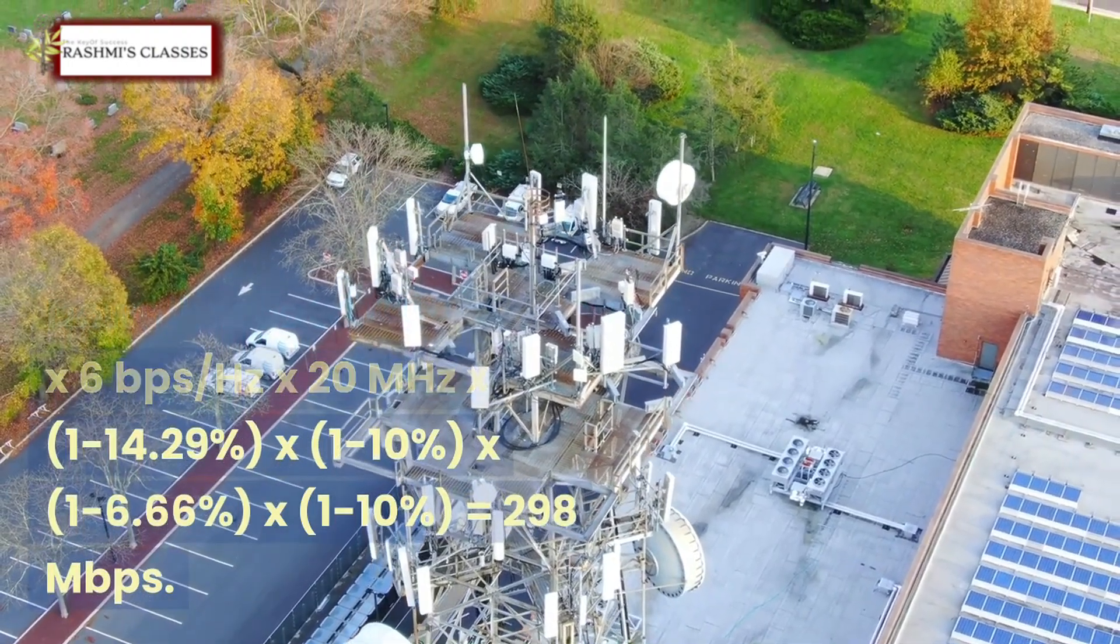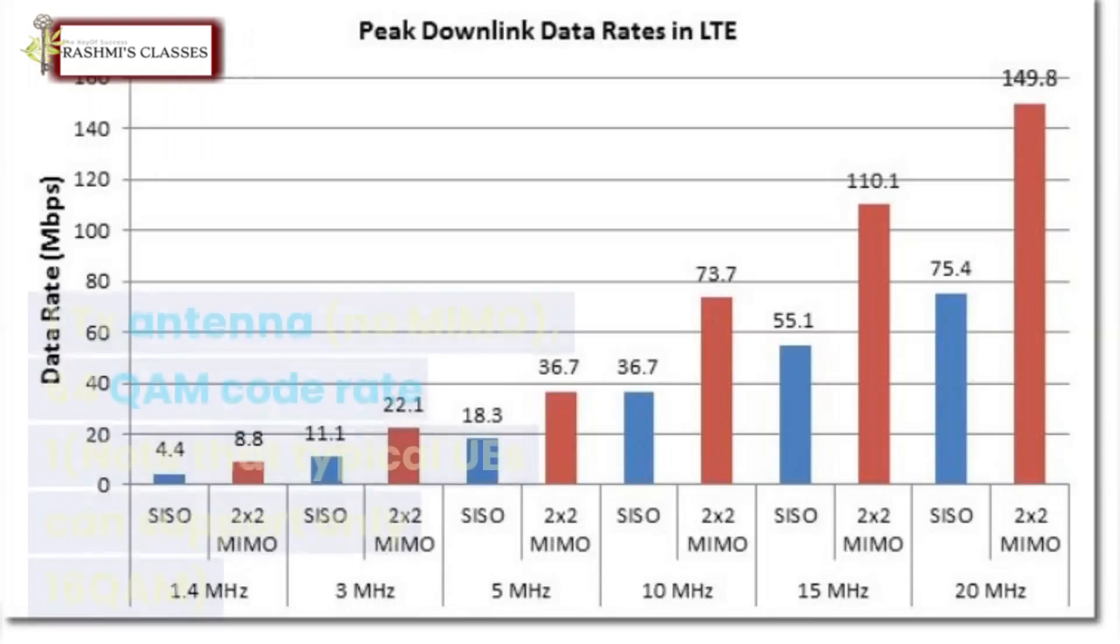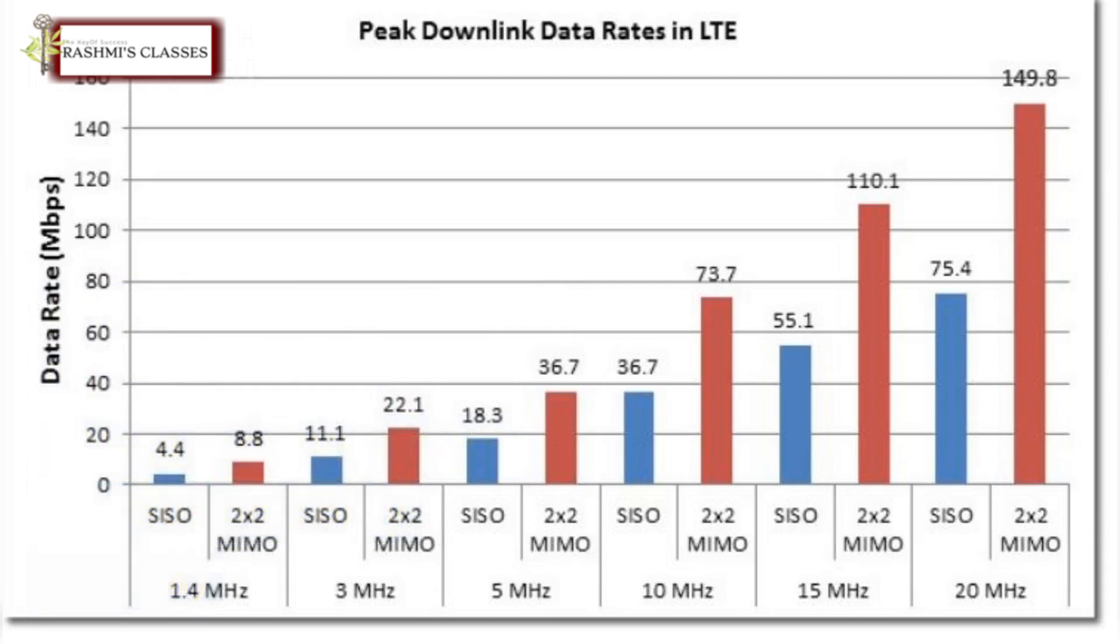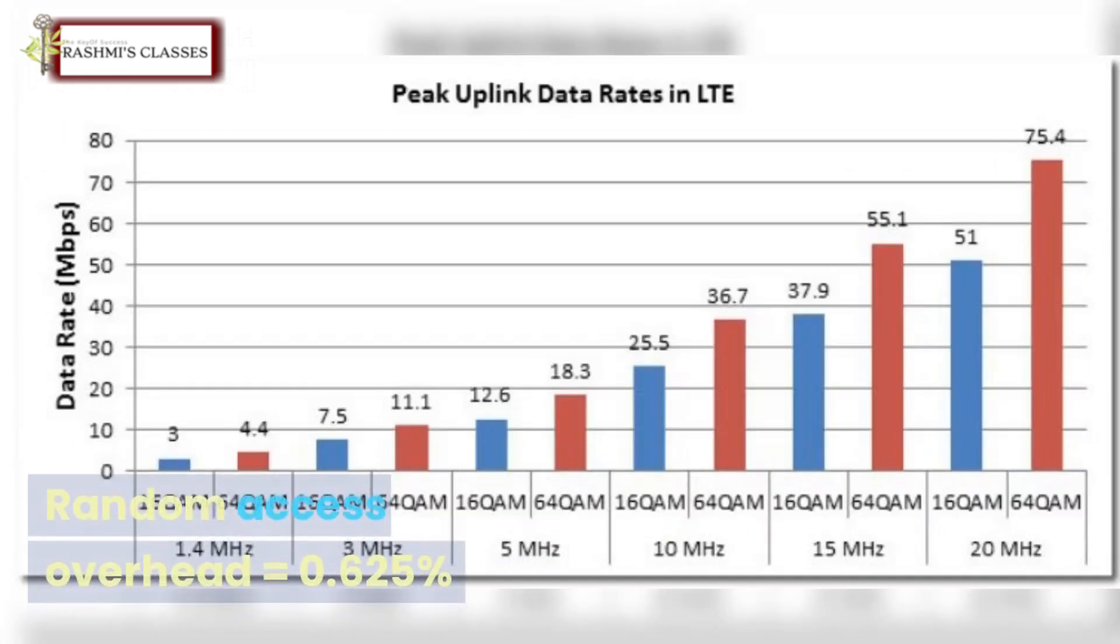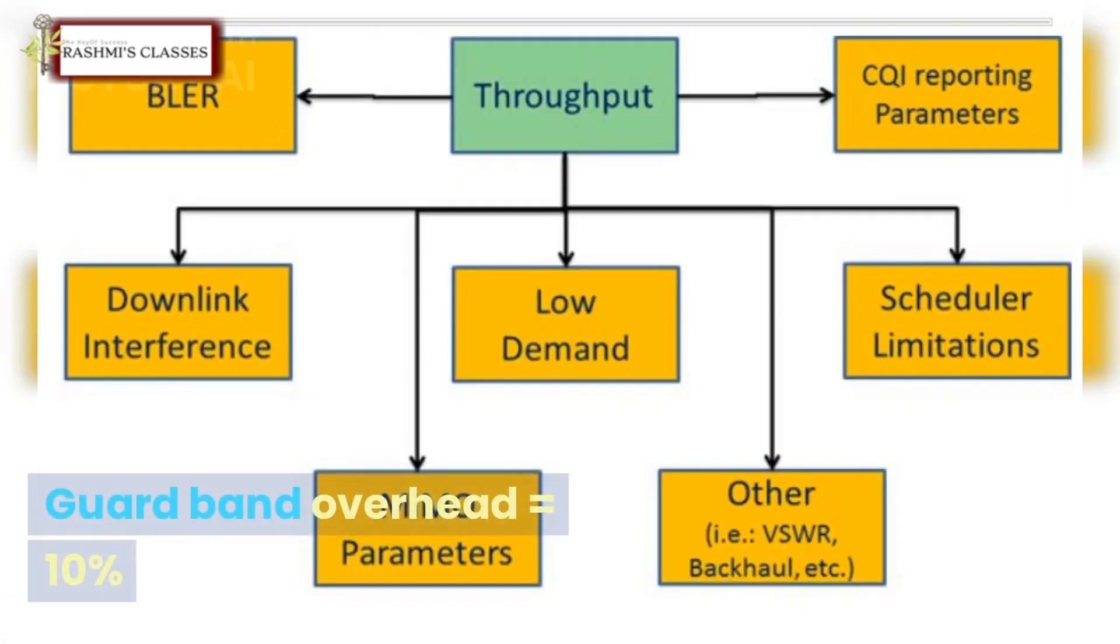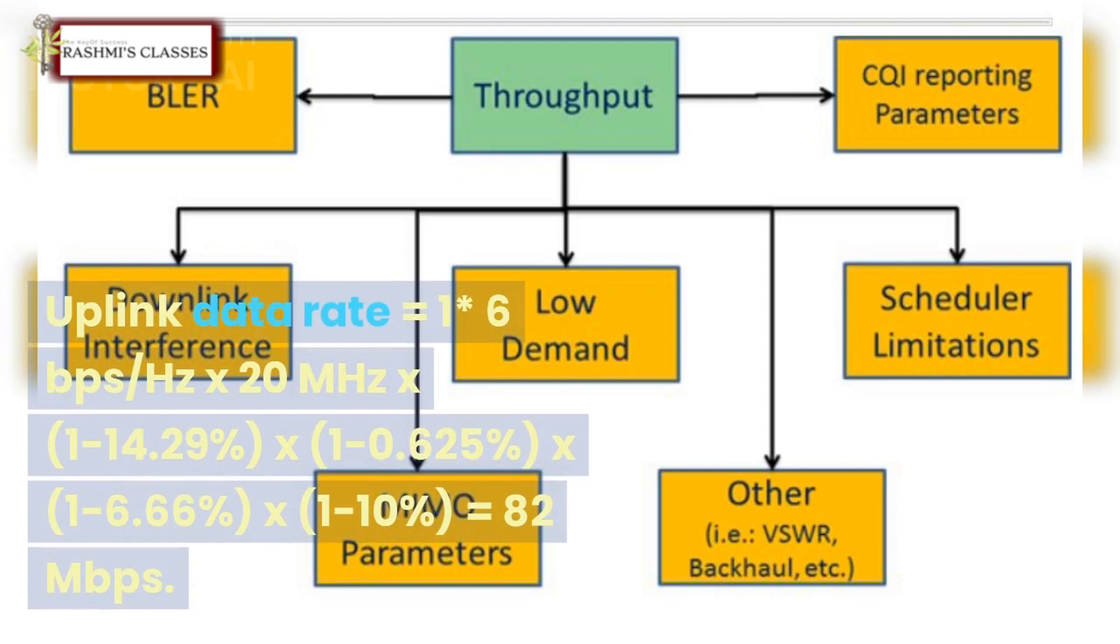Uplink data rate: 1 TX antenna, no MIMO, 64-QAM code rate 1 (note that typical UEs can support only 16-QAM). Pilot overhead = 14.3%, random access overhead = 0.625%, CP overhead = 6.66%, guard band overhead = 10%. Uplink data rate = 1 x 6 bits per second per hertz x 20 MHz x (1 - 14.29%) x (1 - 0.625%) x (1 - 6.66%) x (1 - 10%) = 82 megabits per second.